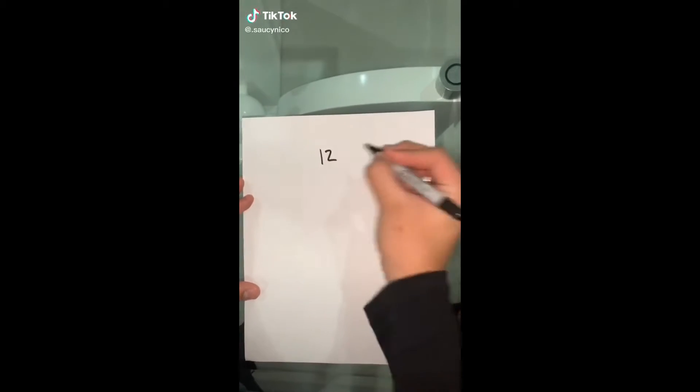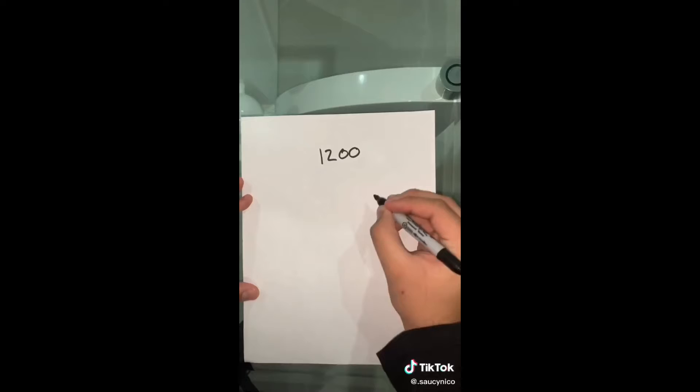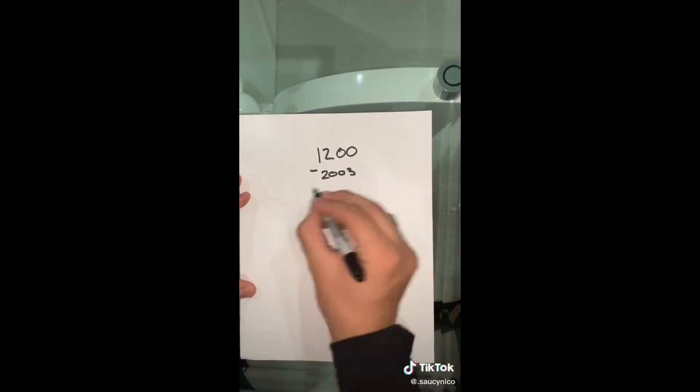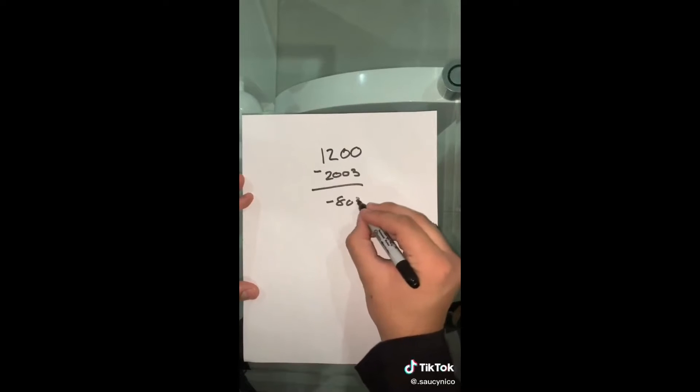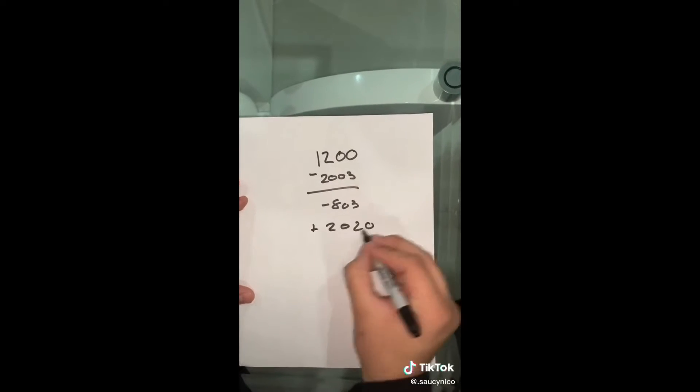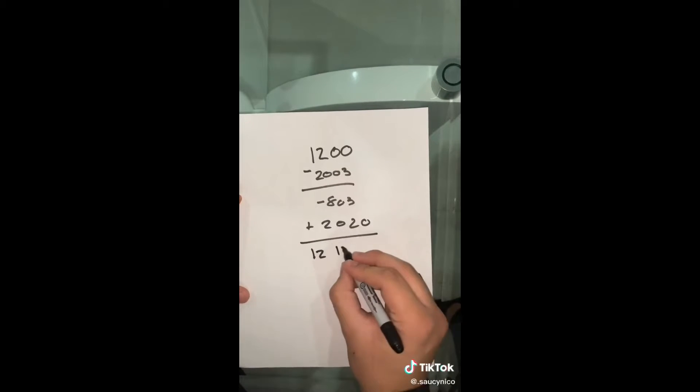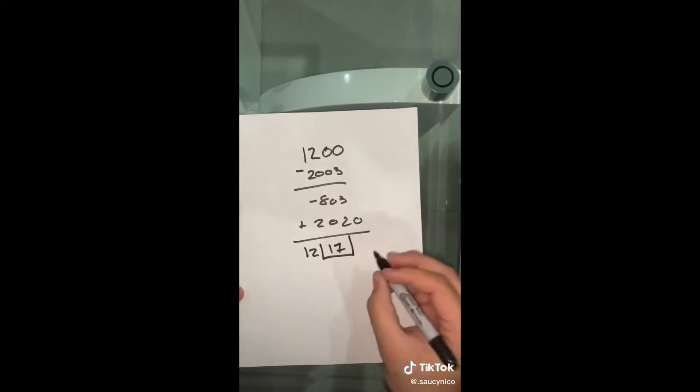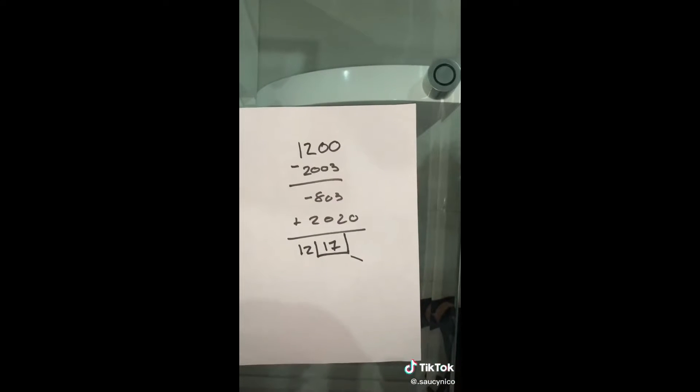They say if you put your shoe size and add two zeros, minus the year you were born, plus the year you're in, you should get a number where the last two digits is your age, or how old you should be turning this year. That one wasn't necessarily a magic trick, but we're going to try it. I wonder if this is actually going to work — it's like shoe size and random numbers actually ending up being my age.